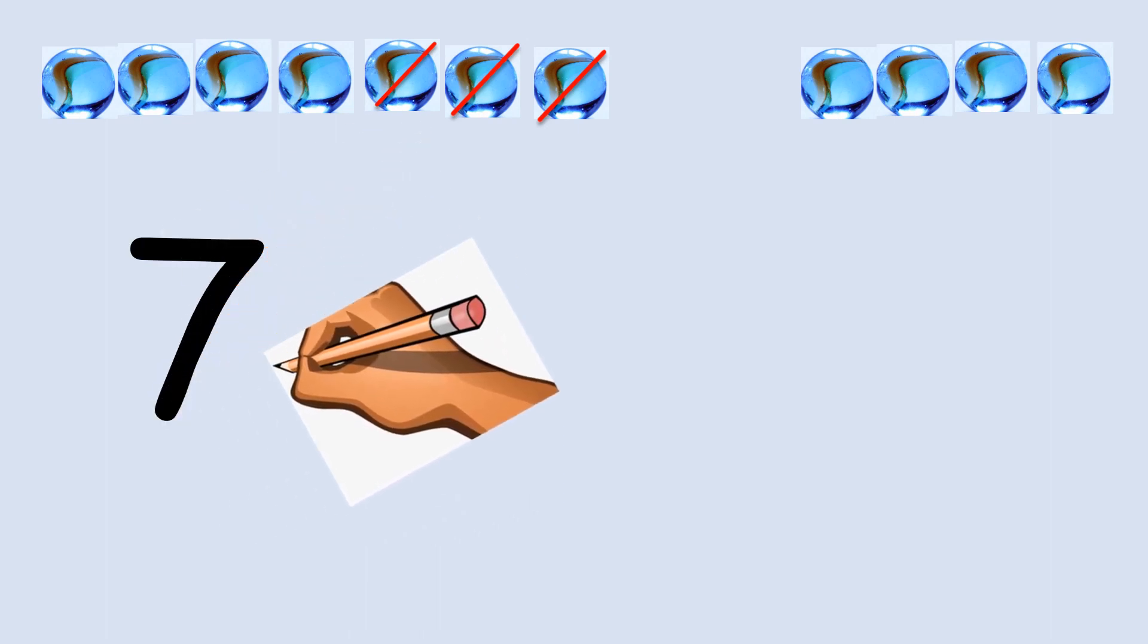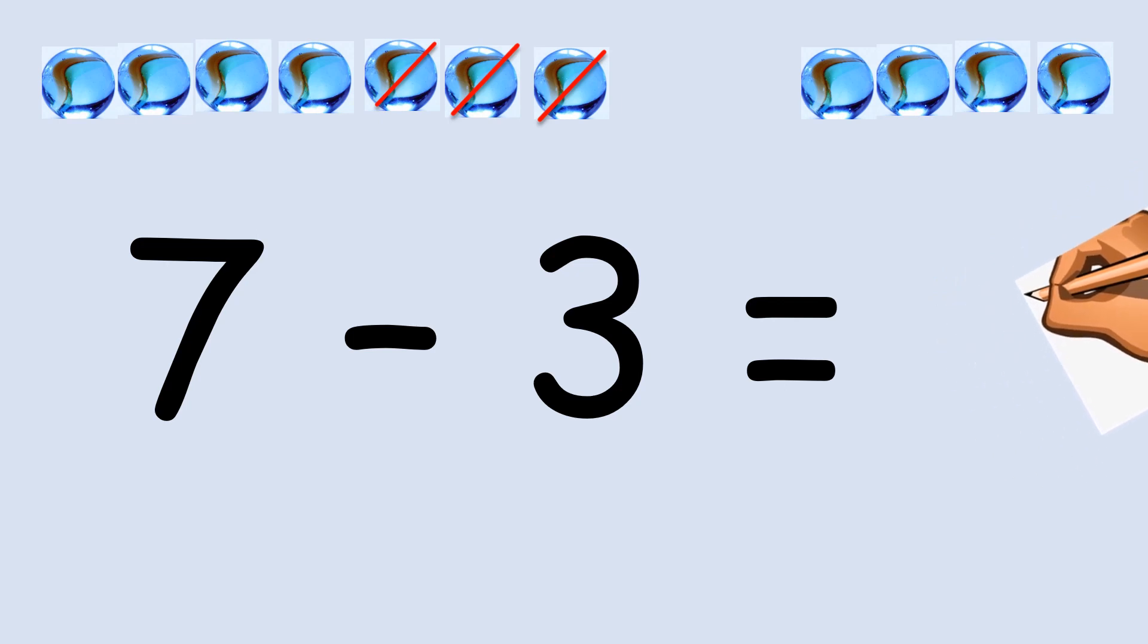By using subtraction, we can find the answer: 7 - 3 = 4 marbles. The dash sign represents subtraction.